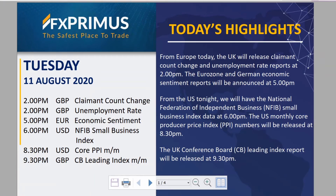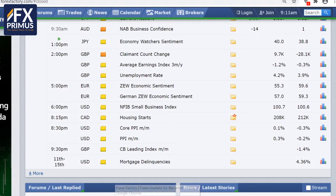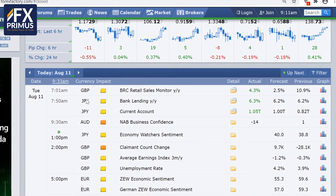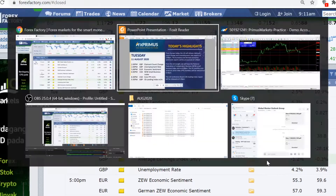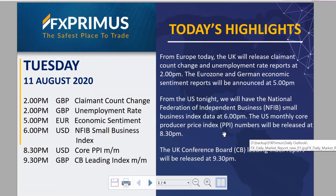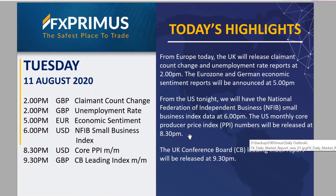The unemployment rate numbers for the UK this afternoon are expected to come in at 4.2%. Any reading below 4.2% will theoretically mean that the economic and employment situation in the UK is not doing that great, and it should theoretically be bearish if the data comes in at more than 4.2%.